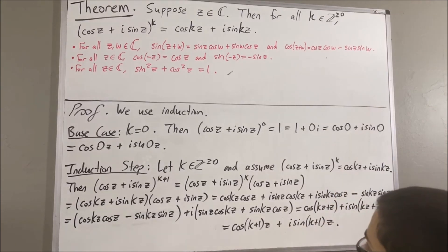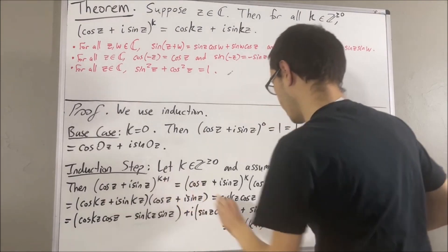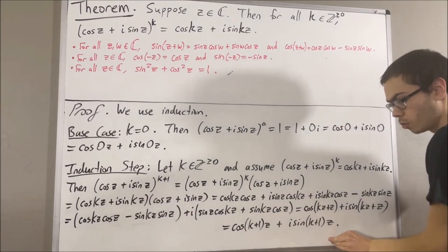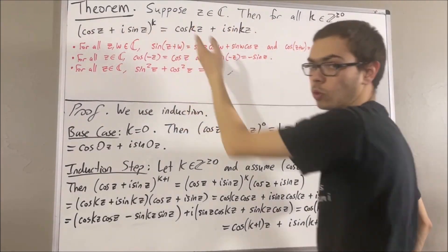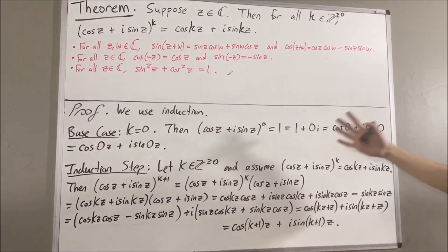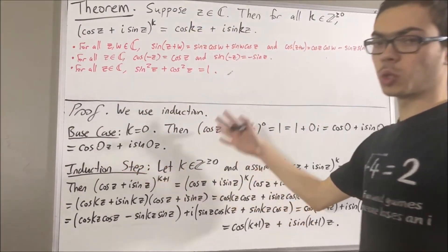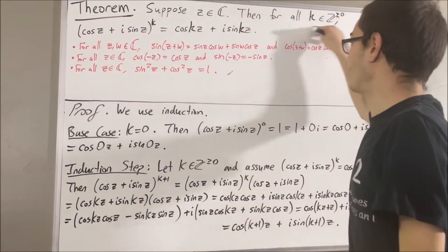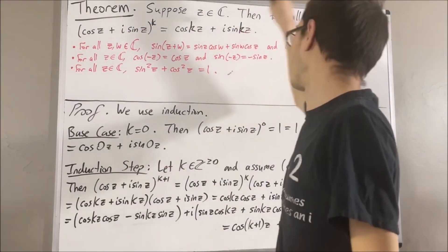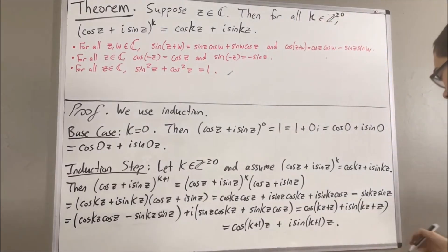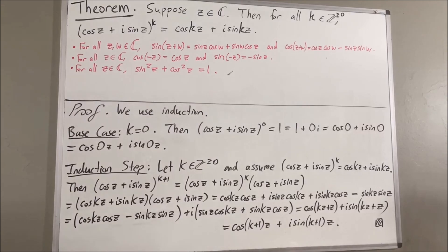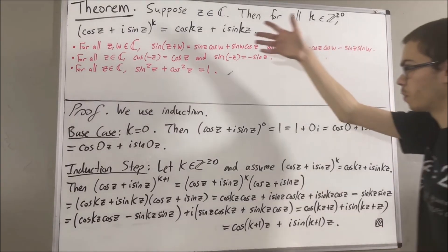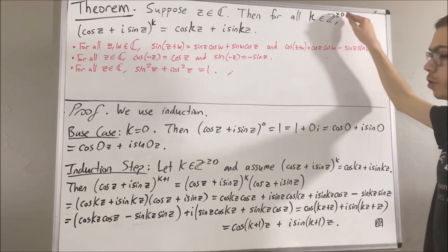And so, we have shown that this is equal to this. In other words, we have shown that this is true where instead of k, we have k plus 1. So, this completes the induction step. And because we've completed both the base case and the induction step, this closes the induction. And so, we have proven that this is true for all integers k greater than or equal to 0. So, this completes the proof. We've proven De Moivre's theorem in the case where k is an integer greater than or equal to 0.